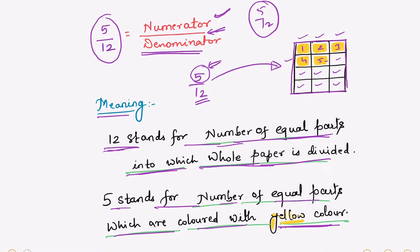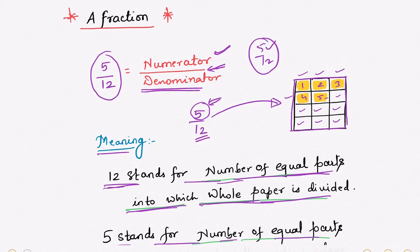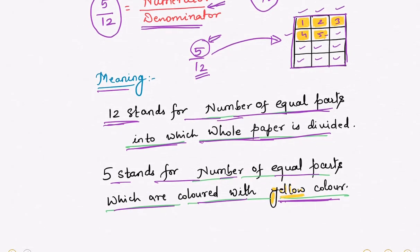If I ask the question: what fraction indicates the colored number of boxes? You can easily say 5 by 12 is the fraction indicating the colored boxes — out of 12 boxes, 5 boxes are colored. This is the application of fractions: if any whole is divided into equal number of parts, that question can be solved with the help of fractions. The two aspects of a fraction are numerator and denominator. Please take a note. Thank you.